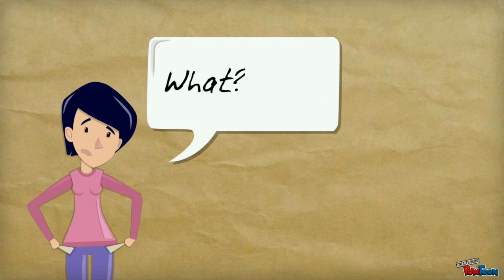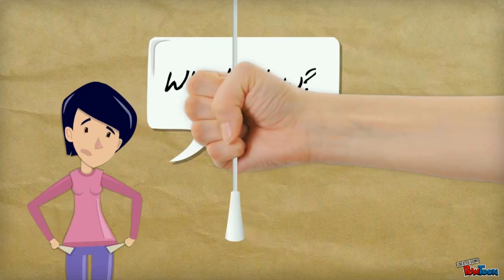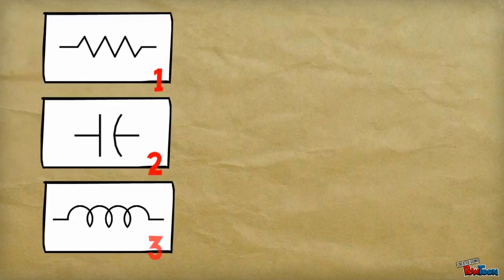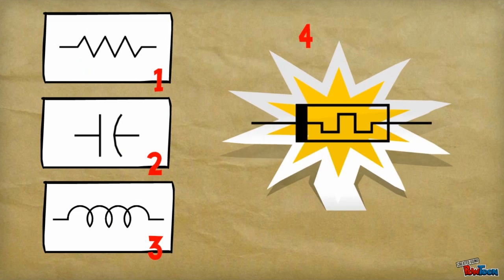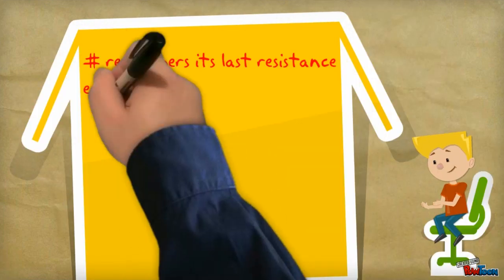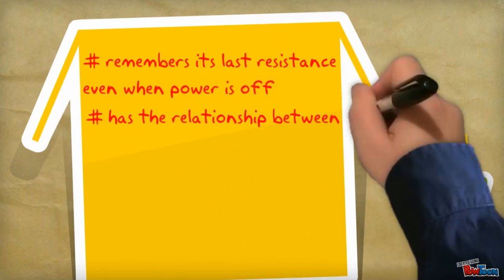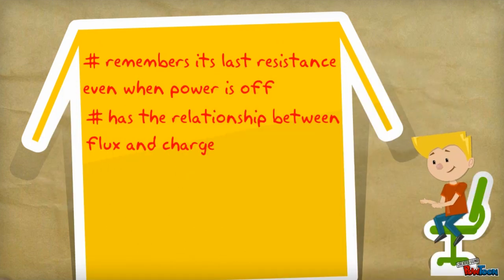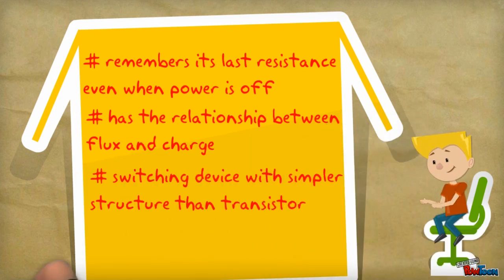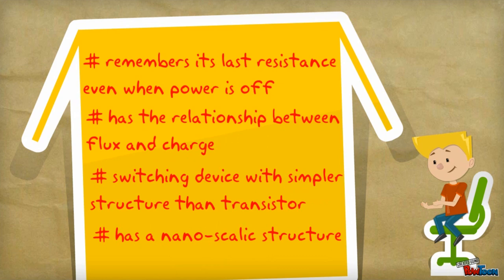What actually is a memristor and how can it help solve this problem? Not until recently, the fundamental circuit elements were known to be the resistor, capacitor, inductor, and fourth, the memristor, which stands for memory resistor. Memristor has many interesting characteristics: it remembers its last resistance even when power is off, it has a relationship between flux and charge, it is considered a switching device with a simpler structure than a transistor, and it is also small with a nanoscale structure.